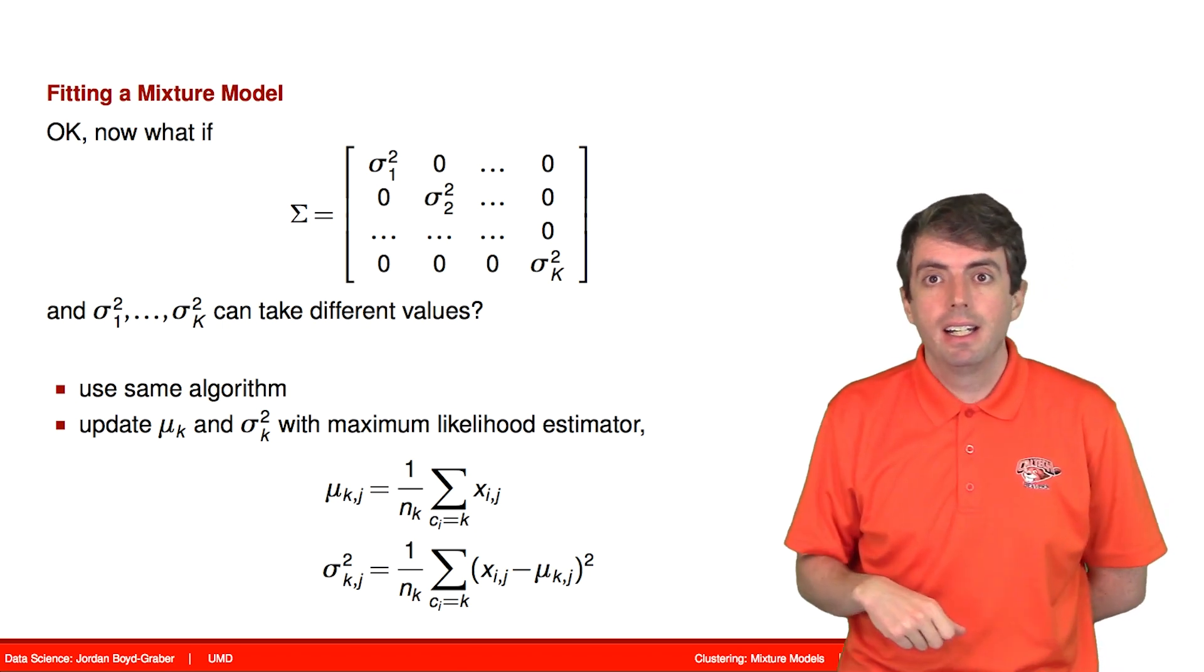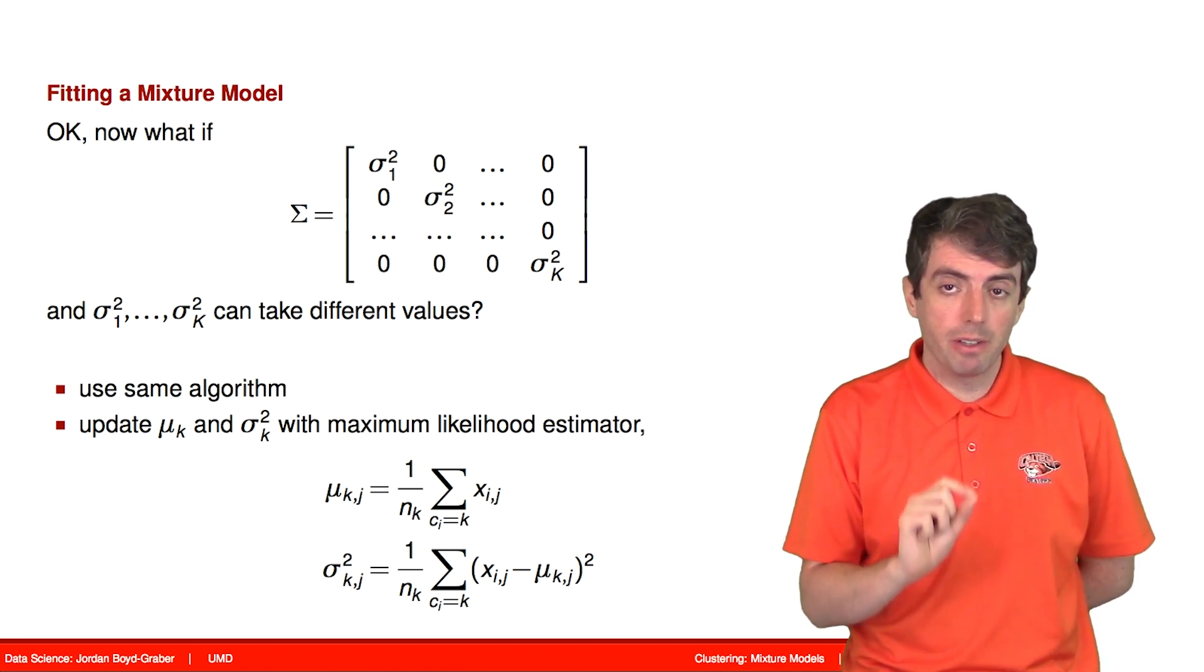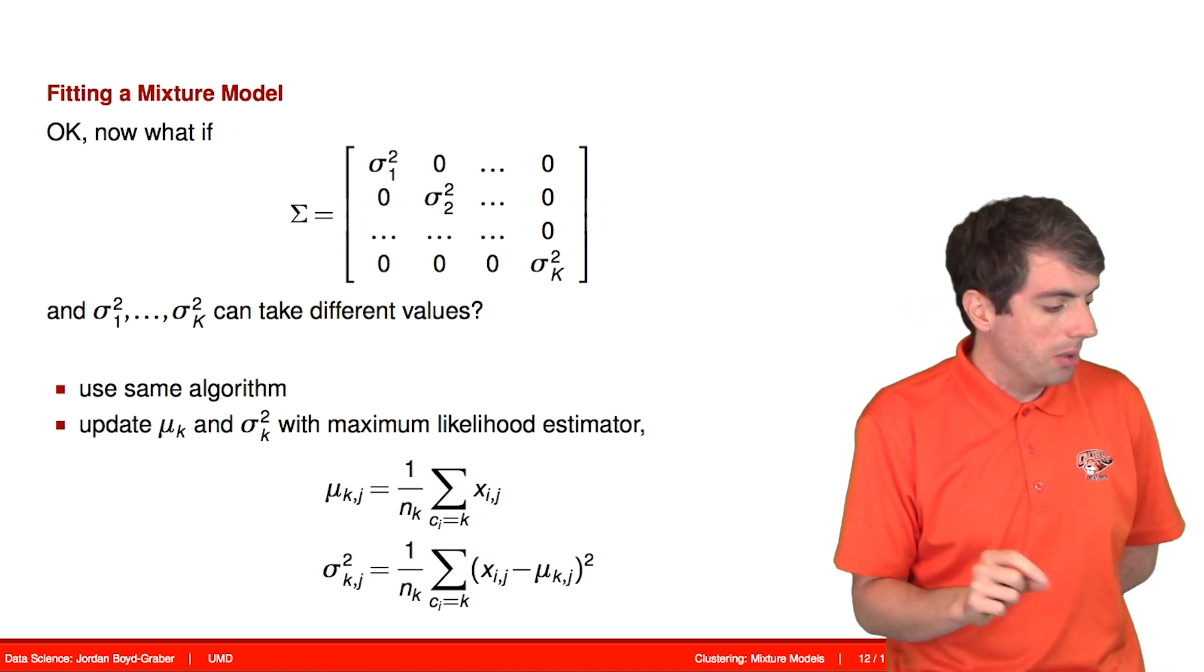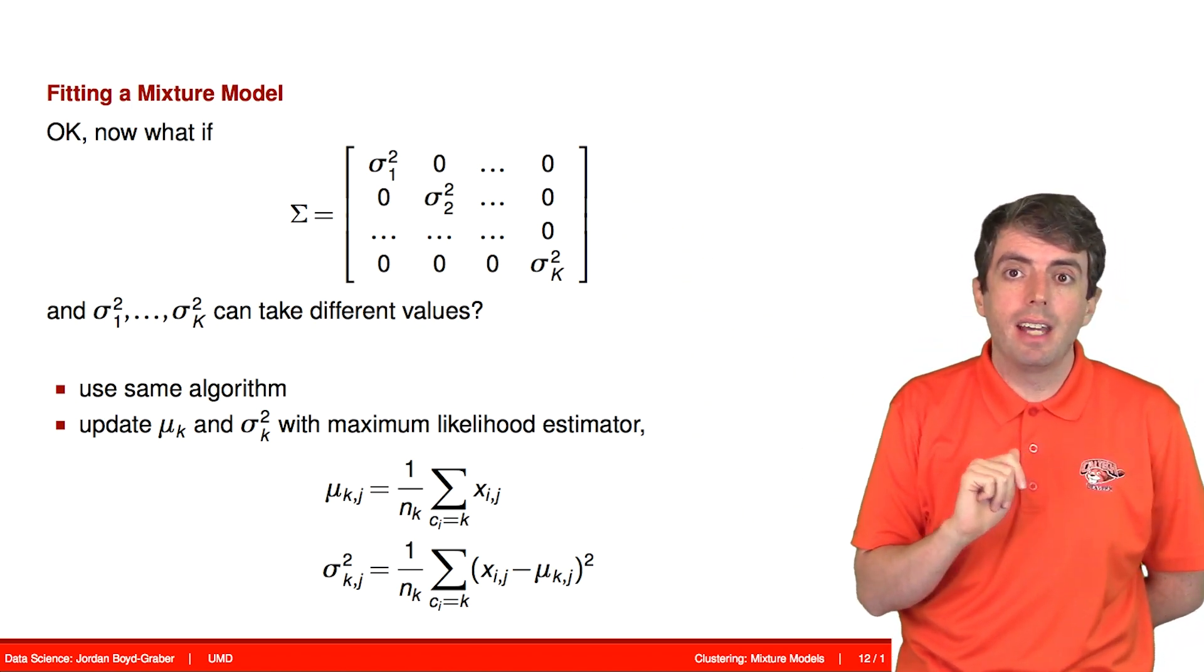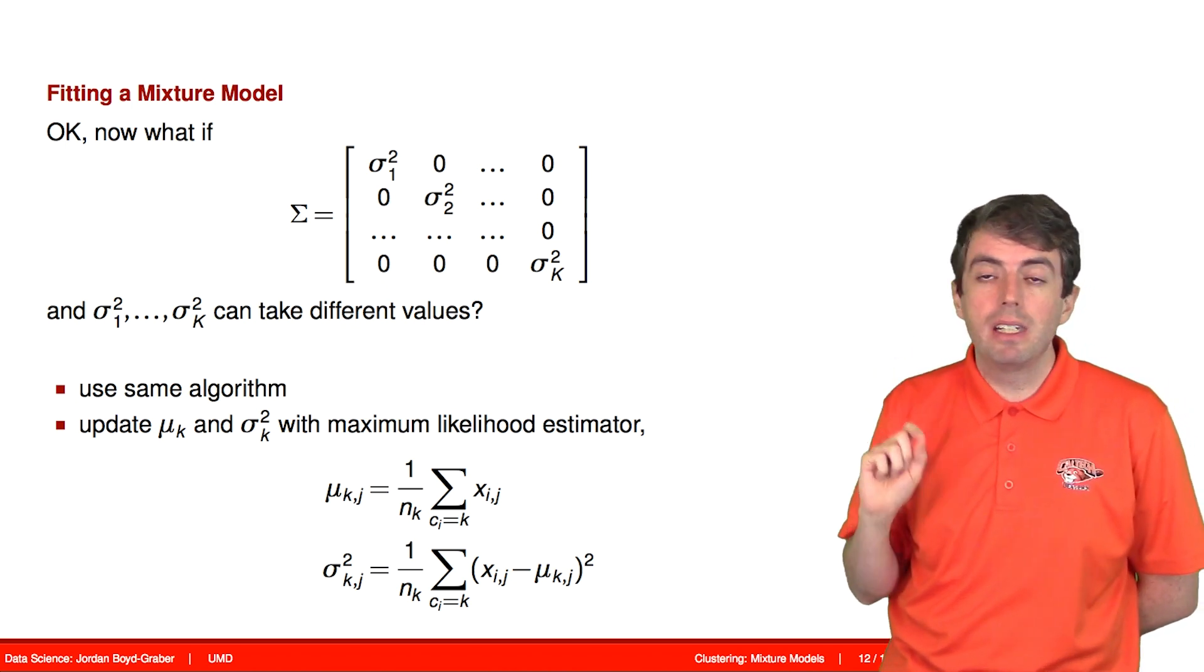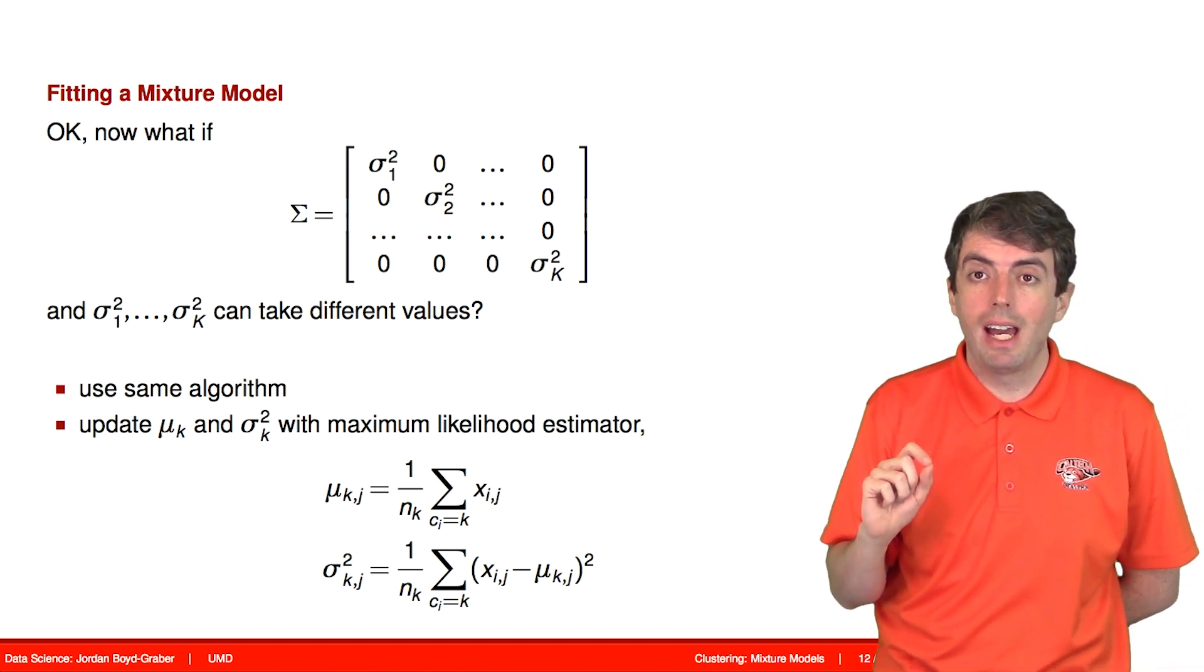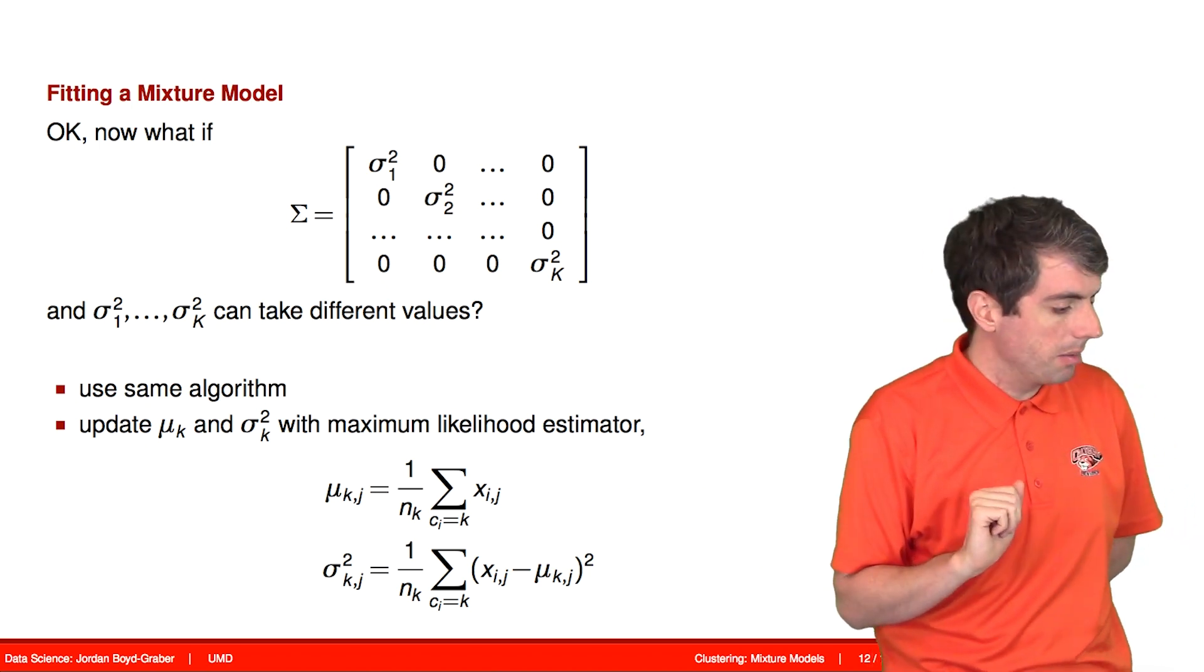Now let's make this a little bit more complicated and actually use the power of the Gaussian distribution to encode the shape of the clusters. And that makes our life a little bit more difficult, but gives us more power. So now we're still going to assume a diagonal matrix, but what's different is that each diagonal entry can be a different number. So this allows us to have different dimensions being more variable than other dimensions.